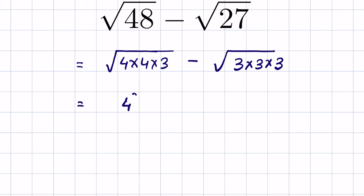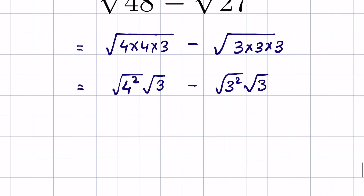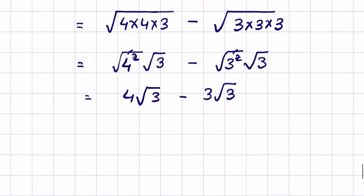We rewrite this as 4 squared under the square root times square root of 3, minus 3 squared under the square root times square root of 3. The square root cancels with the square, giving us 4 times square root of 3, and similarly 3 times square root of 3.